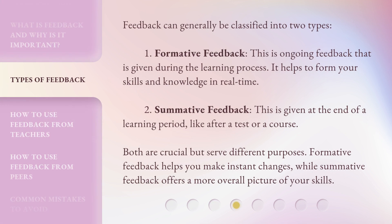Feedback can generally be classified into two types. First, formative feedback — this is ongoing feedback given during the learning process. It helps to form your skills and knowledge in real time. Second, summative feedback — this is given at the end of a learning period, like after a test or a course. Both are crucial but serve different purposes. Formative feedback helps you make instant changes, while summative feedback offers a more overall picture of your skills.